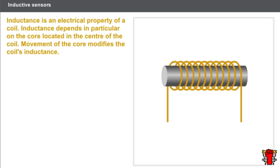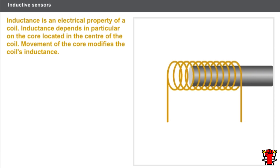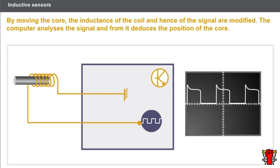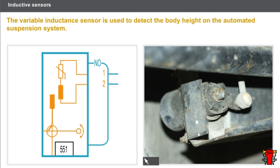Inductance is an electrical property of a coil, and it depends in particular on the core located in the center of the coil. The movement of the core modifies the coil's inductance. The coil is supplied with an alternating signal, and the coil's inductance modifies that alternating signal. By moving the core, the inductance of the coil and hence the signal are modified. The computer analyzes the signal and from it deduces the position of the core. The variable inductance sensor is used to detect the body height on the automated suspension system.